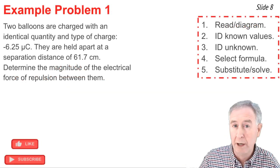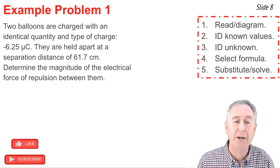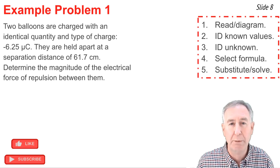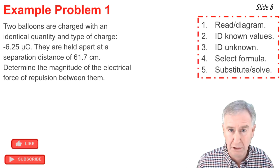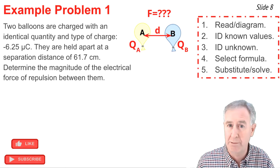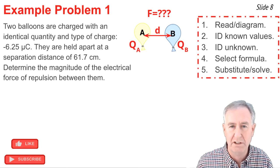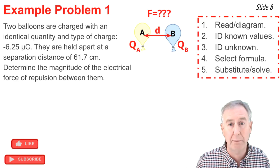Here's my first example problem. I'm going to read and then diagram the situation. Two balloons are charged with an identical amount of charge of negative 6.25 micro Coulombs. They're held a distance of 61.7 centimeters apart to determine the magnitude of the force. So my mental picture is I have two balloons. I know the QA and QB value of the balloons and the separation distance and I'm looking for my F electrical.